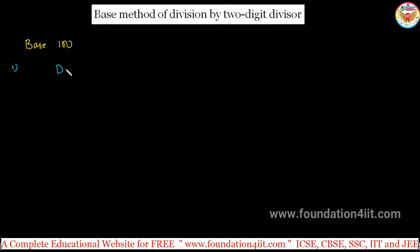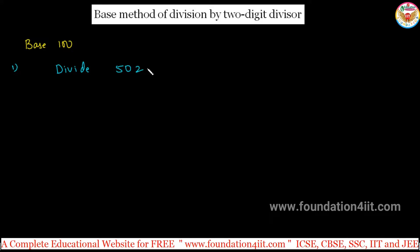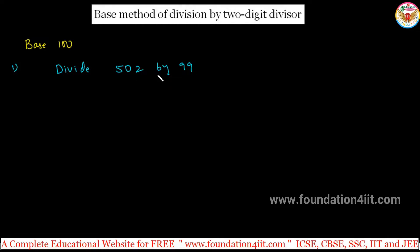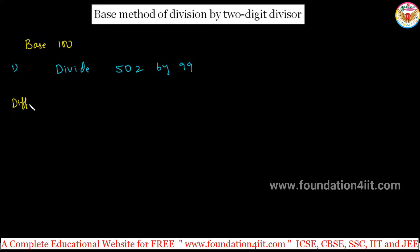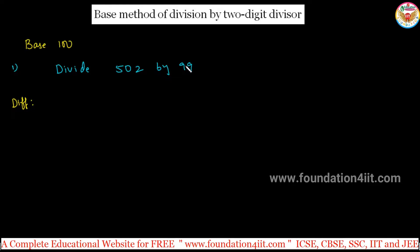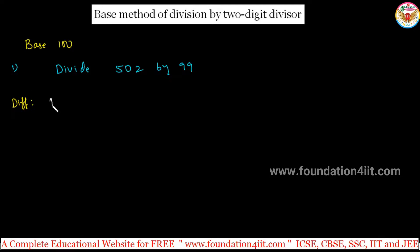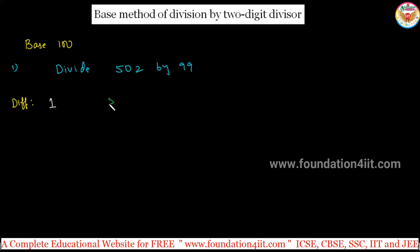Now the question is: divide 502 by 99. You need to divide 502 with 99. According to the method, the base is 100 and the first step is to find the difference. Base is 100, divisor is 99, so the difference between them is 1. Take this difference as 1.